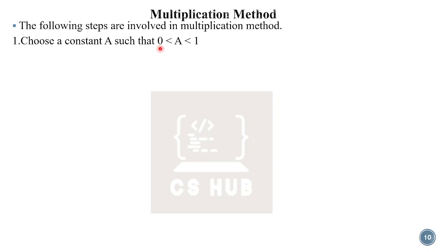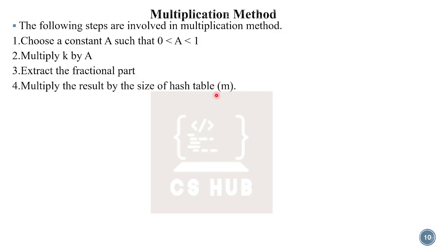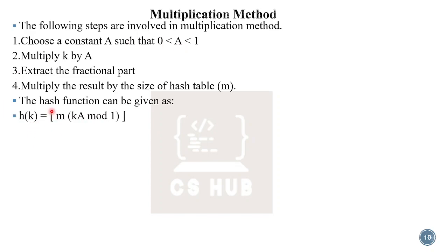In the multiplication method, we choose a constant a between 0 and 1, multiply k by a, extract the fractional part using mod 1, then multiply the result by the size of the hash table m. The hash function is: h(k) = floor(m × (k × a mod 1)).